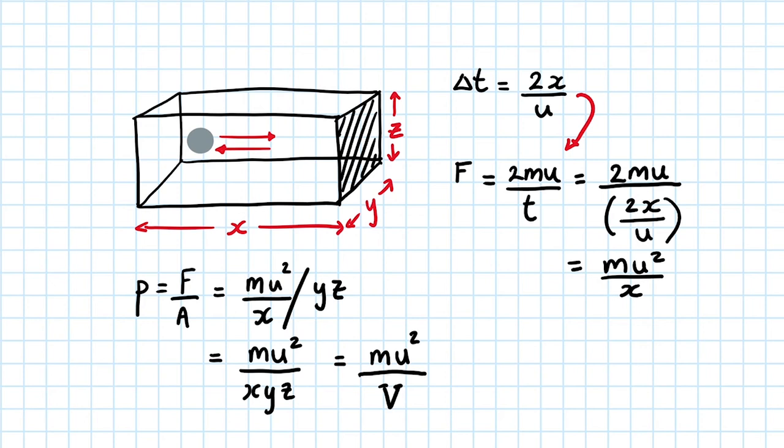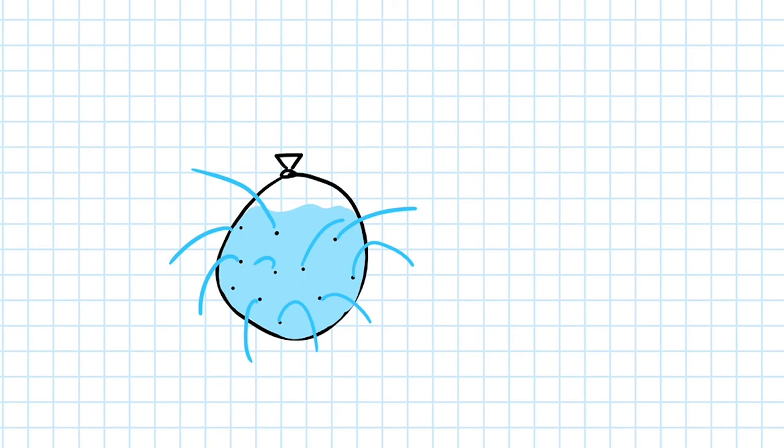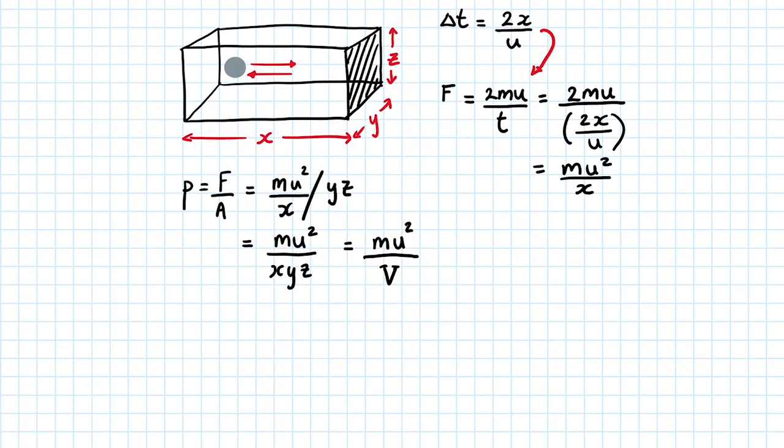This is beginning to look a lot like the kinetic theory equation that we're trying to derive. But where has the factor of a third come from? Well, pressure is a scalar quantity that acts in all directions. The increase in pressure caused by each collision will, on average, be distributed evenly in each of the x, y, and z axes. So we need to divide the right-hand side of the equation by 3 to take this into account.